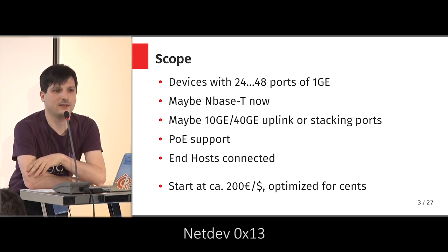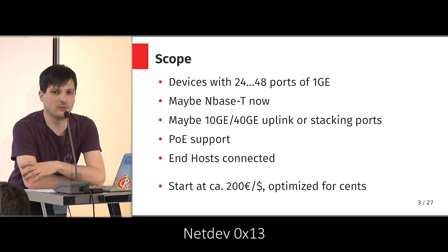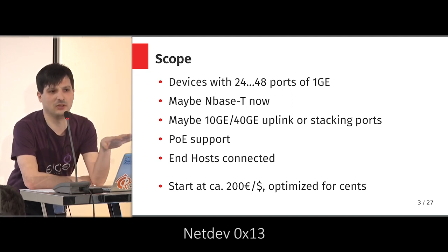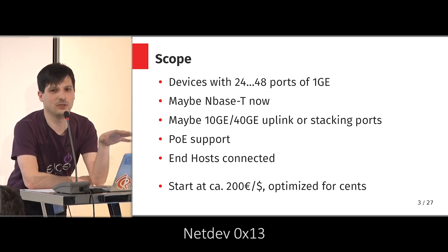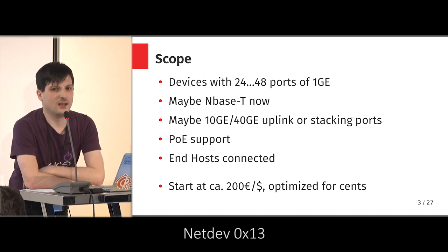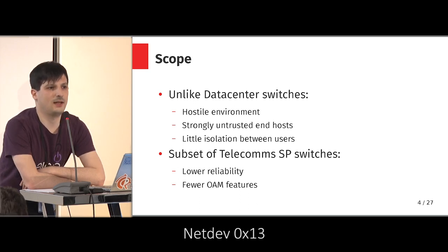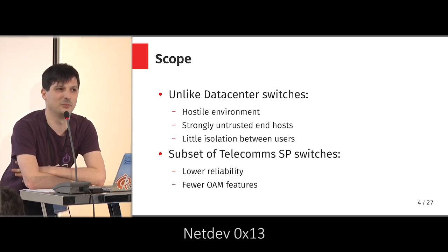We're looking at devices that typically have gigabit Ethernet ports. Nowadays it's NBase-T for access points. They have uplink ports, normally have PoE support, and are reasonably cheap devices — 200 euro is perhaps a bit low, but that's the cheapest you can get devices of this class. It's a very different situation to other setups; in a data center you normally have at least some level of trust that your VM host is not going to try and break your switch.